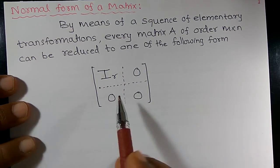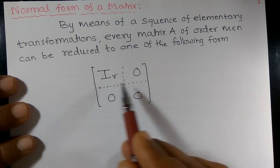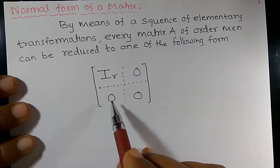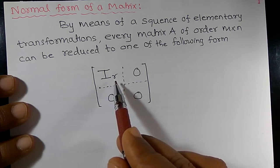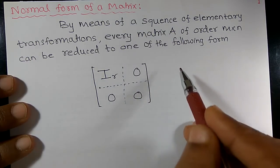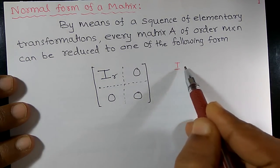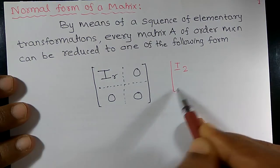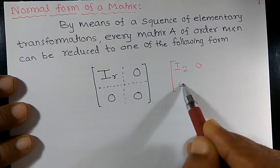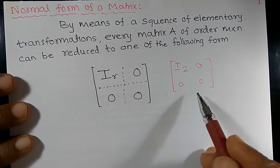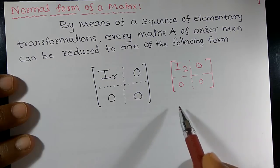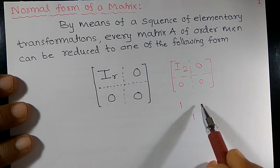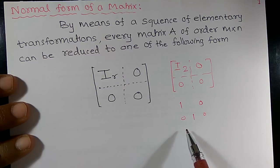The normal form means we can reduce the matrix to the form: IR, 0, 0, 0 — where IR means the unit matrix of order r and all other elements are zero. For example, if I write I2, it is understood to be the unit matrix of order 2, with 1s on the diagonal and zeros elsewhere.